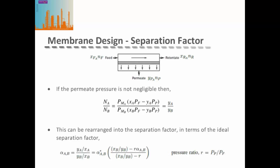However, if the permeate pressure is not negligible, we can't remove it from our equation, though we can still rearrange the ratio of fluxes into the separation factor. In this case, we generate a separation factor in terms of our ideal separation factor, the ratio of the composition in the retentate side and the permeate side of component B, and the pressure ratio — which is the pressure on the permeate side divided by the pressure on the feed retentate side of the membrane.